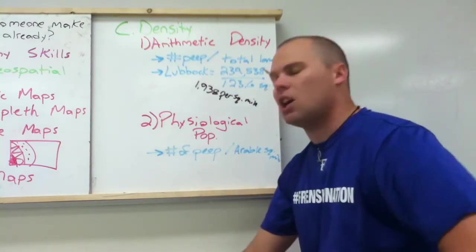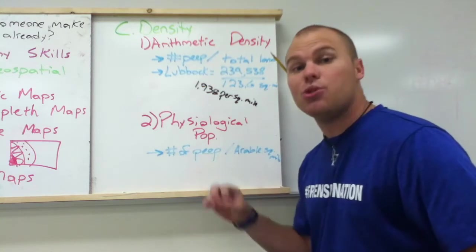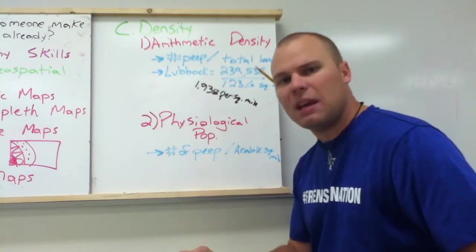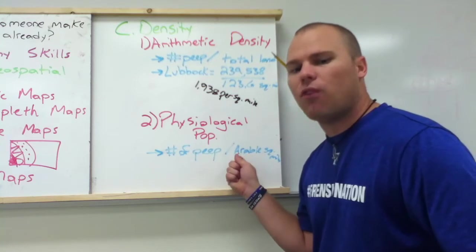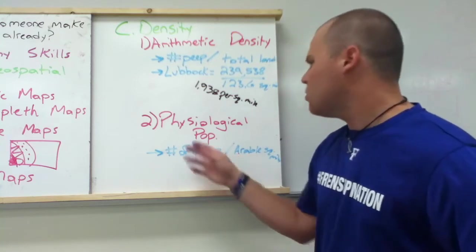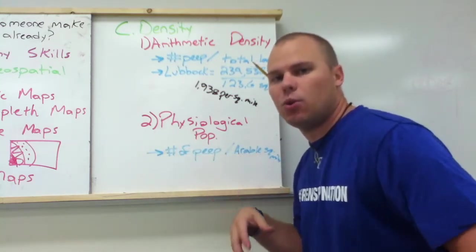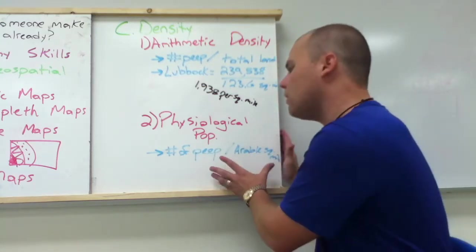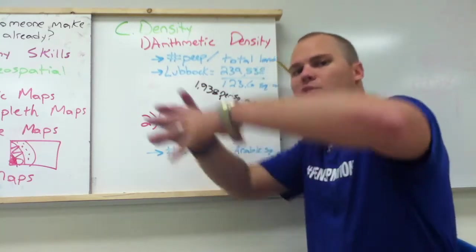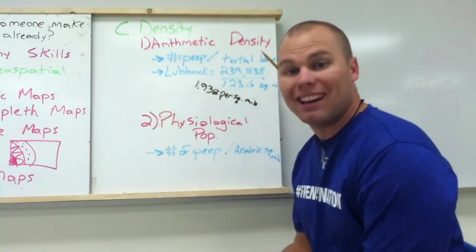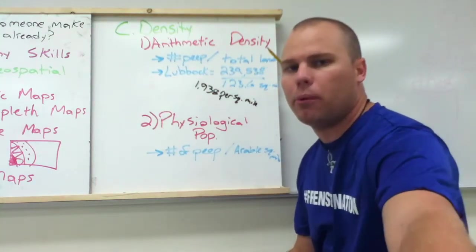Next is physiological population density. You take the number of people and divide that by the amount of arable land — the amount of farmable land. So you're looking at how many people live on an area that has enough land to farm. If you took just the city of Lubbock it wouldn't be very useful, but if you took the rural Lubbock County and looked at farmland, that number would be more meaningful.